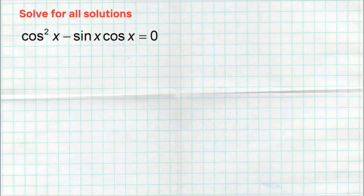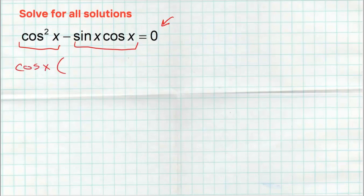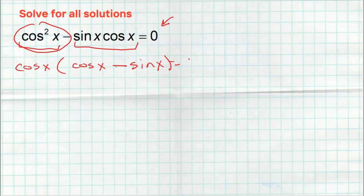Here's another one. I already have a zero on one side — that's great. I only have two terms, so I'm looking for the greatest common factor. Both terms have a cosine of x that can be factored out. When you factor out, you divide away — cosine squared divided by cosine leaves a cosine of x; the back term sine(x)·cosine(x) divided by cosine leaves just negative sine of x, giving cosine of x times the quantity cosine of x minus sine of x equals zero.